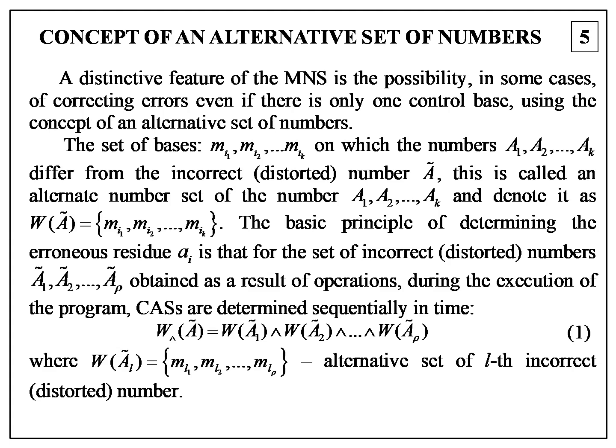The set of bases on which the numbers differ from the incorrect distorted number is called an alternative set of numbers. The basic principle of determining the erroneous residue is that for the set of incorrect numbers obtained as a result of operation during execution of the program, conditional alternative sets are determined sequentially in time by expression 1.